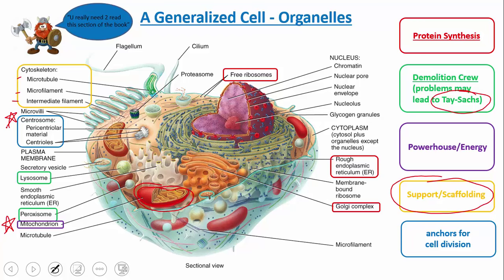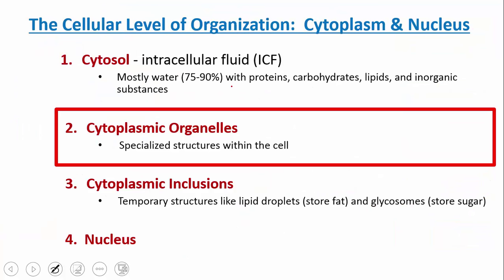We're focusing more on an animal cell here. You really do need to read the book on this. Make sure you understand what a eukaryotic cell is — a cell that has a membrane-bound nucleus that holds the genetic information. Prokaryotic cells do not have a membrane-bound nucleus, and we'll speak about that more later in this lecture.